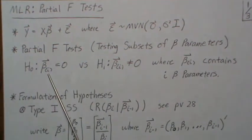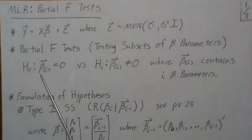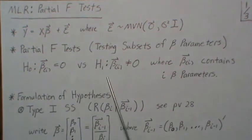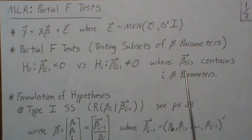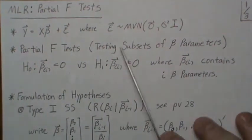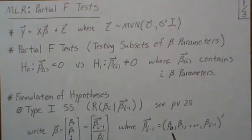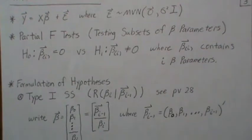My notation is that I put in parentheses a number — that's how many beta parameters are being tested — versus the alternative that at least one of them is not zero. Note the vector sign, so beta_i contains i beta parameters. We're going to look at the partial F-test for the Type 1 sums of squares, the Type 2 sums of squares, and in general.